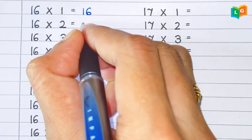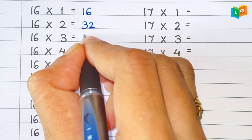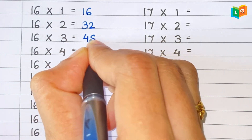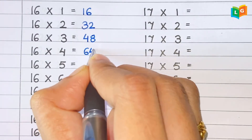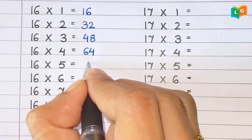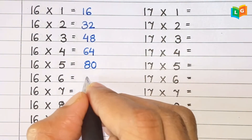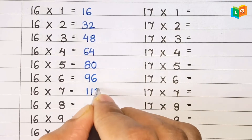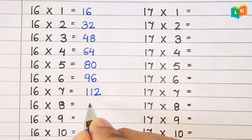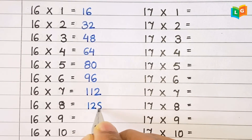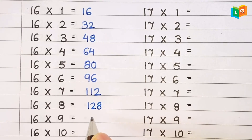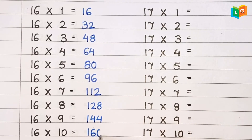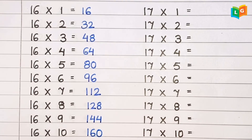Now let's see table of 16. 16 1s are 16, 16 2s are 32, 16 3s are 48, 16 4s are 64, 16 5s are 80, 16 6s are 96, 16 7s are 112, 16 8s are 128, 16 9s are 144, 16 10s are 160.